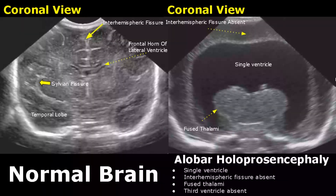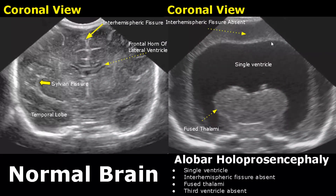Alobar holoprosencephaly is the most severe type. We will see a single large ventricle and fused thalami. The interhemispheric fissure is absent, the third ventricle is also absent, and there is a very small amount of brain tissue.